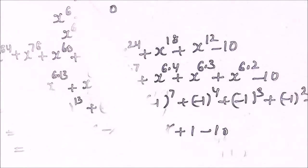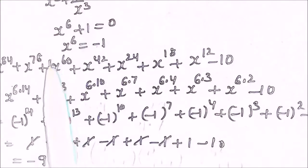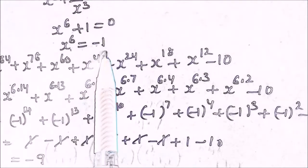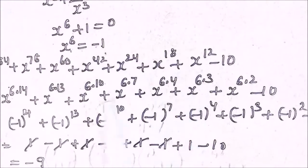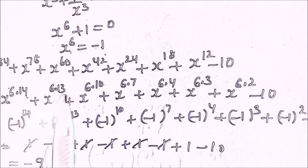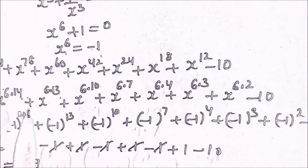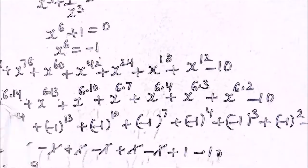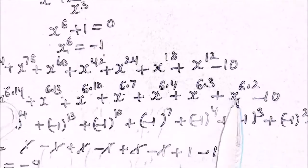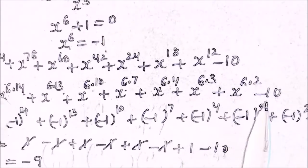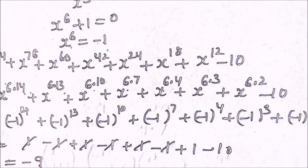In an exam we need not solve this full procedure. We can remember directly that if x plus 1 upon x equals root 3, it means x to the power 6 is minus 1. Whenever we have the expression, we take x raised to the power 6 outside wherever it is common, and we will be left with the exponents 14, 13, 10, 7, 4, 3, and 2. The odd and even powers alternate and cancel — all 7 terms pair up with cancellations — and we are left with 1 minus 10, so the answer is minus 9.